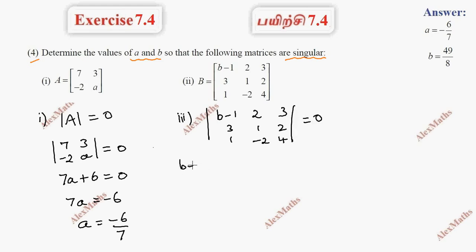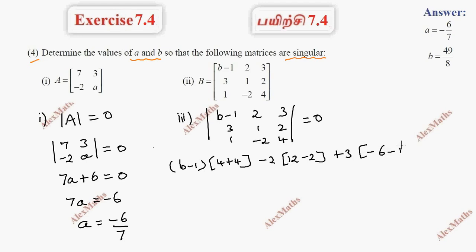Expanding: (b minus 1) into (4 plus 4), minus 2 into (12 minus 2), plus 3 into (minus 6 minus 1) equals 0. This gives 8b minus 8, minus 20, plus 10.